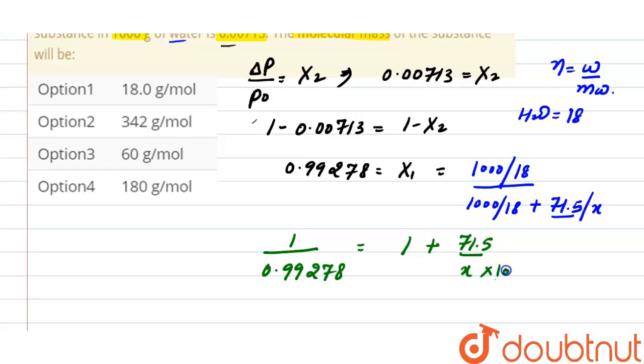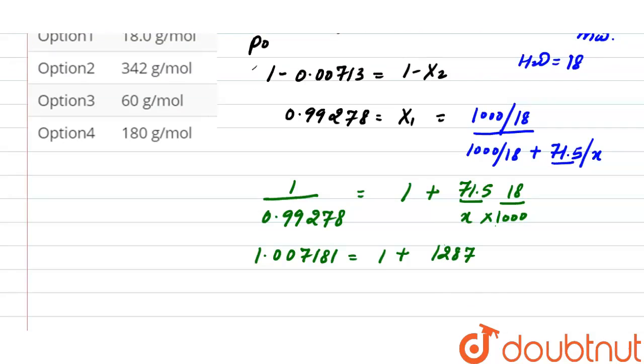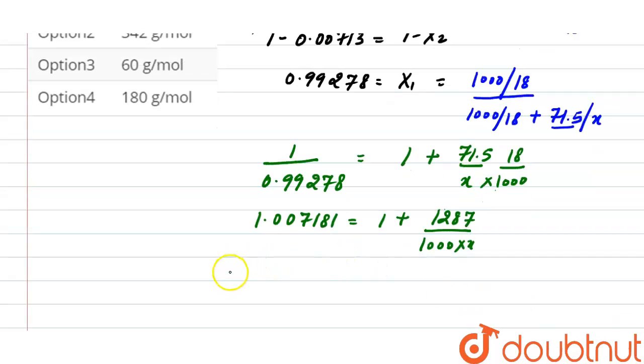And this 1 divided by 0.99278 will be 1.007181 equals to 1 plus 1287 divided by 1000 into x, that is molecular weight we have to find out.